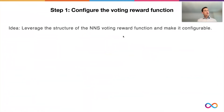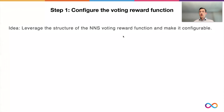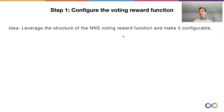Now getting a bit more into detail on how voting rewards can be determined. As a first step, we have to determine the pool of rewards, defined by a voting reward function. The overall idea is to leverage the structure of the NNS voting reward function and make it configurable. The reasoning for this approach is that leveraging the NNS has two advantages: first, we can reuse the code base of the NNS, which allows for timely delivery; and second, the concepts and terms of the NNS are already familiar to the community, so it's natural to reuse them.